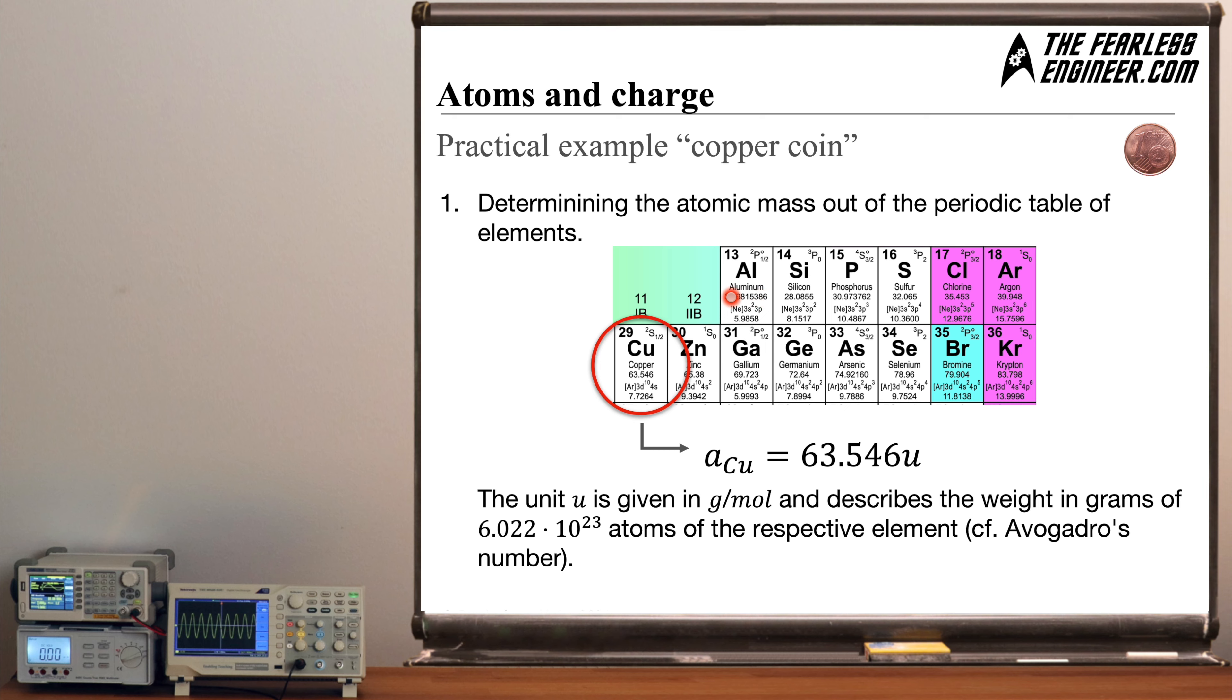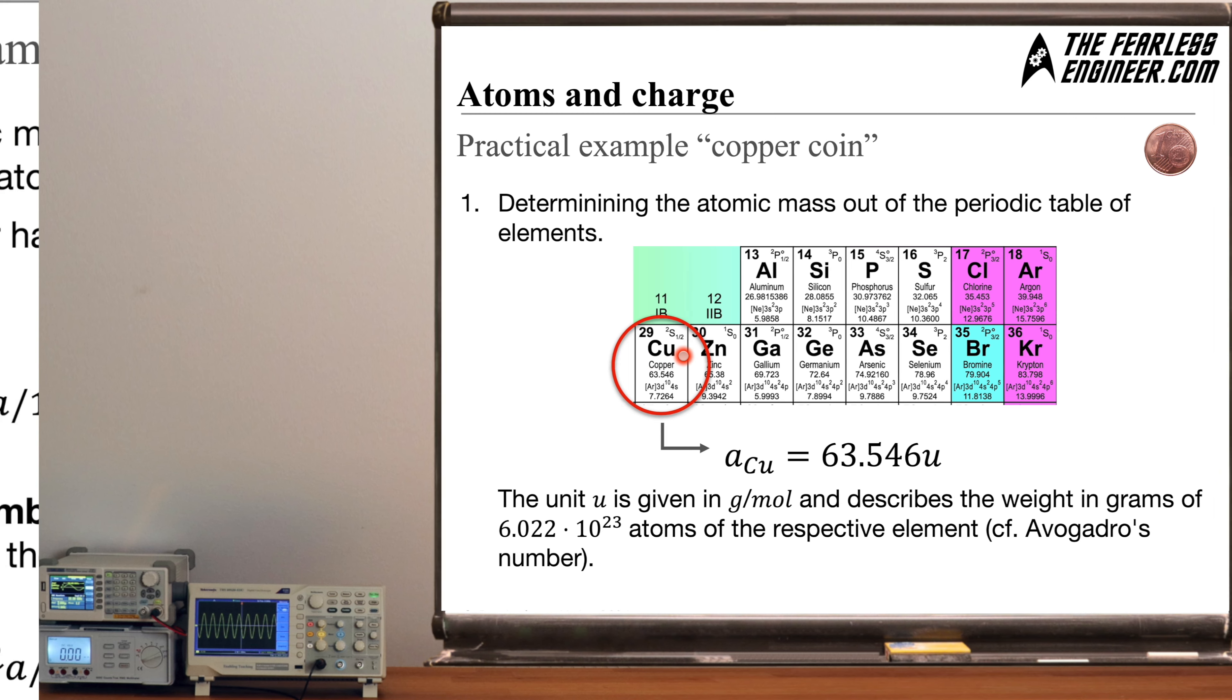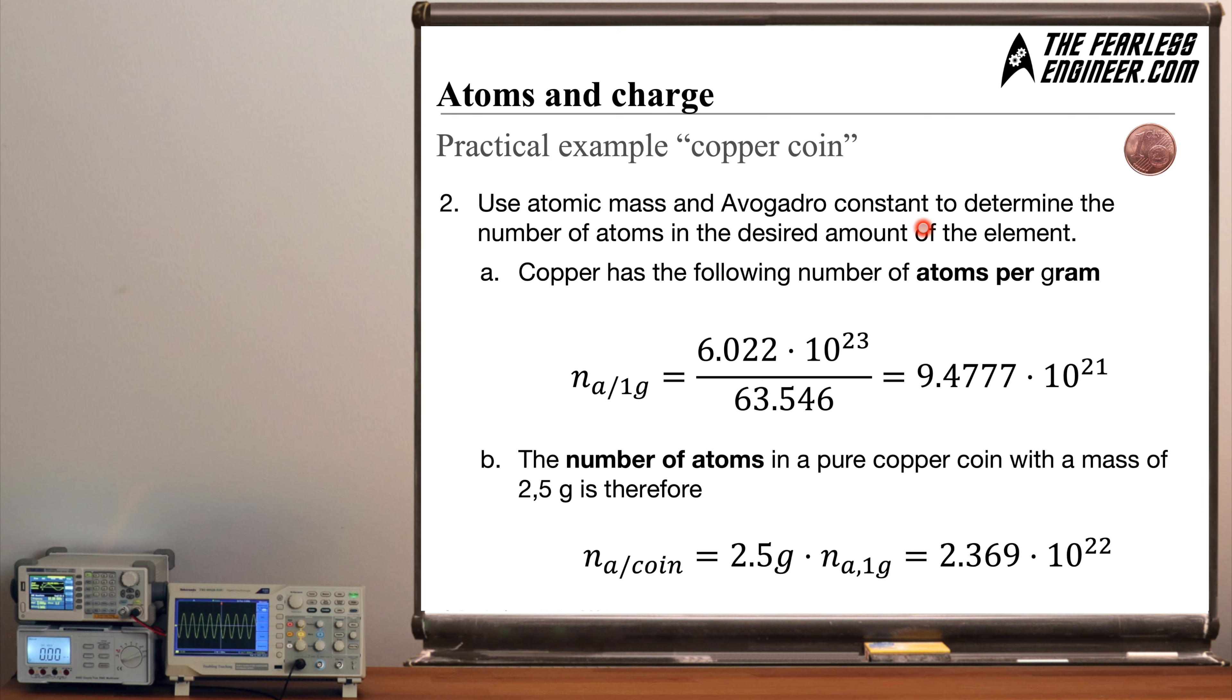And we can do the exact same thing for every other element for example aluminum. And by looking at the atomic weight of aluminum for example which is roughly 27 we can easily tell that it's 27 times heavier than hydrogen and half as heavy as copper for example. So it's a very easy way to compare elements among each other.